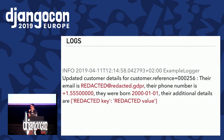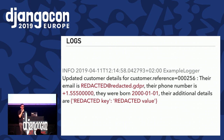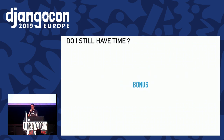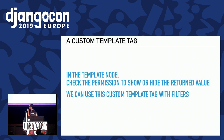What are the next steps? Obviously this is very simplified, there's room for improvements. The next step is open sourcing. As a bonus, we also have custom template tags — in the template nodes, we check a permission to see if we should show or hide the value, and this template tag can be used with filters.